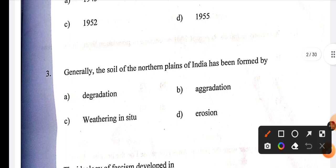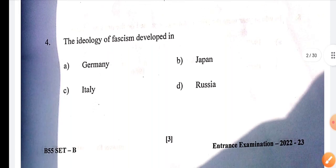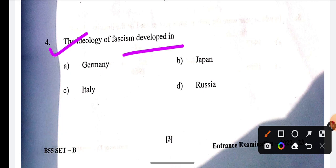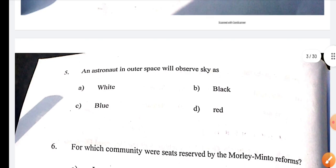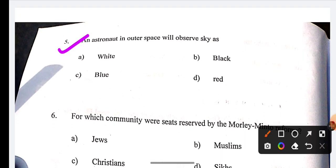Next question: Generally, the soil of the northern plain of India has been formed by? The correct answer is aggregation. Next, ideology of fascism was developed - the correct answer is C. An astronaut in outer space will observe the sky as? The correct answer is black.